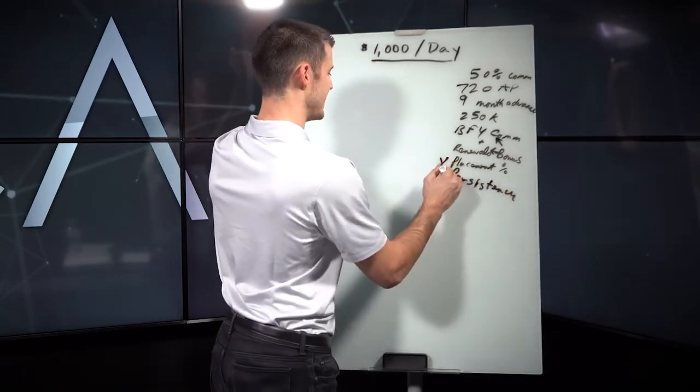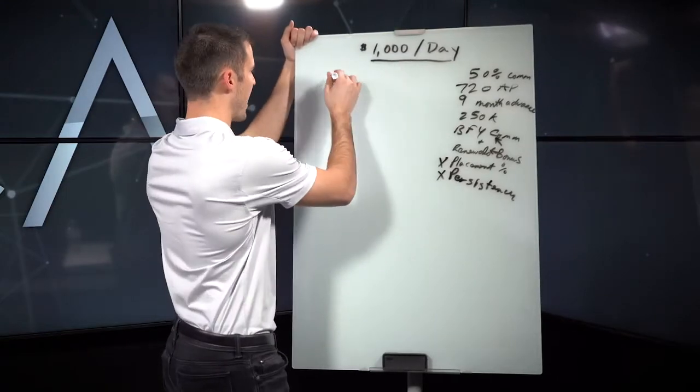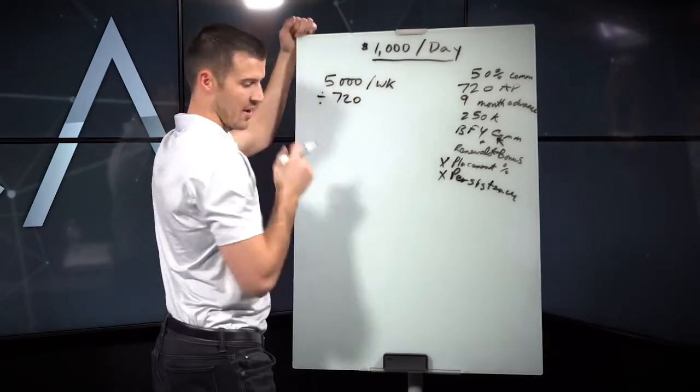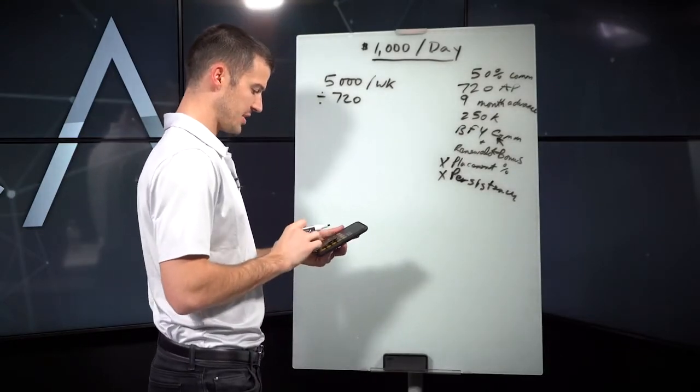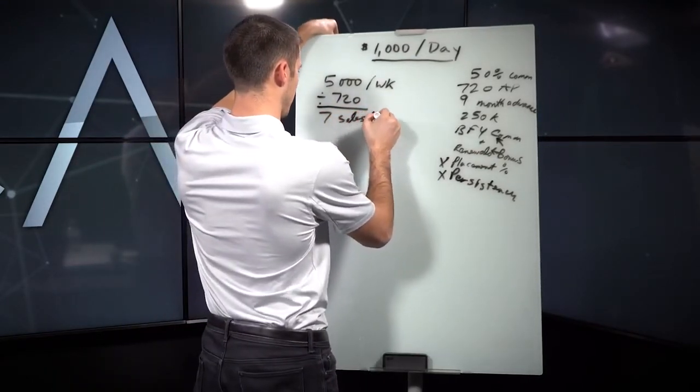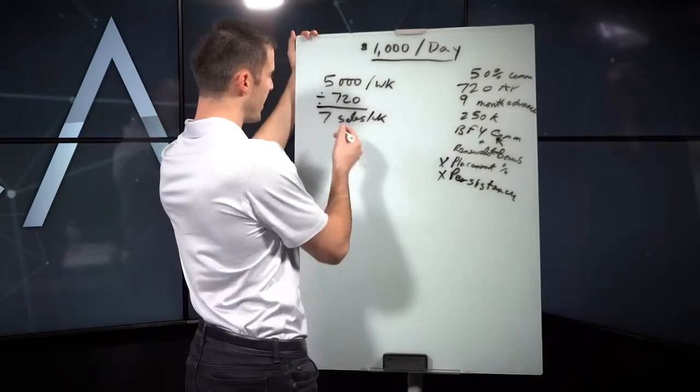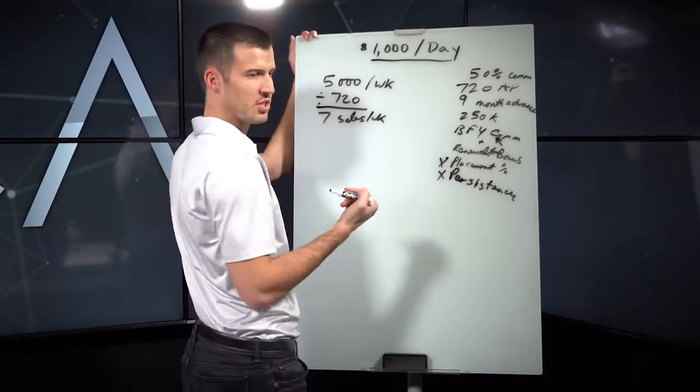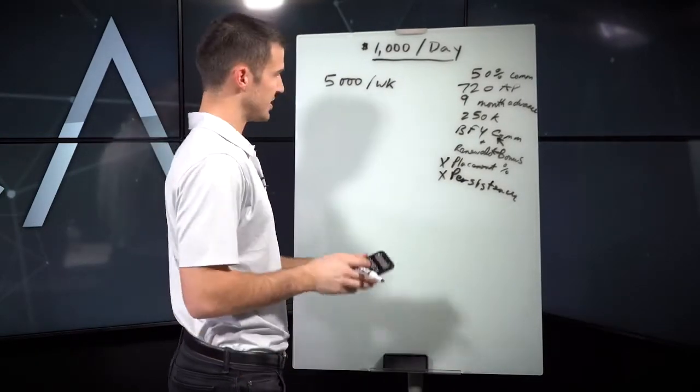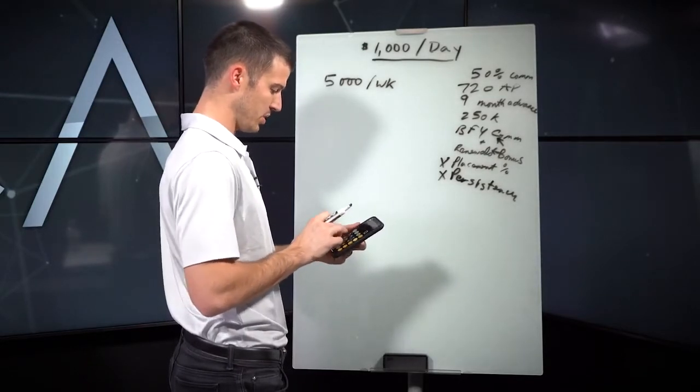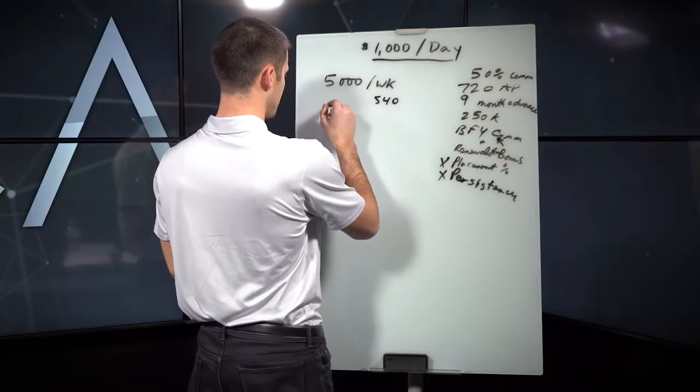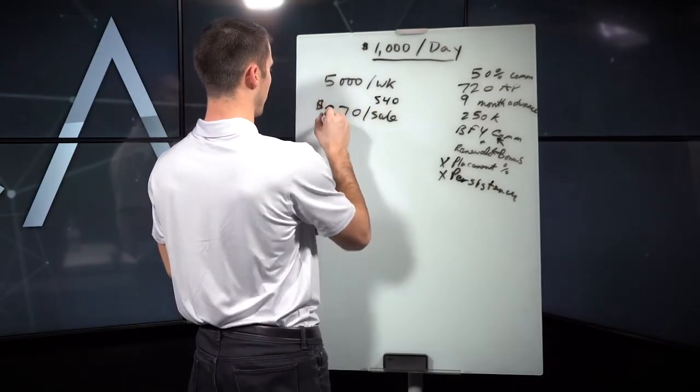Let's just say that you get a nine month advance and you want to make $250,000 over the next 12 months. You want the balanced first year commissions and renewals to simply be a bonus. Let's also think about what is your placement percentage and what is your persistency. If we did some math and we didn't include these, what you would be looking at is $5,000 per week. If my average AP is 720, we are looking at seven cells per week.